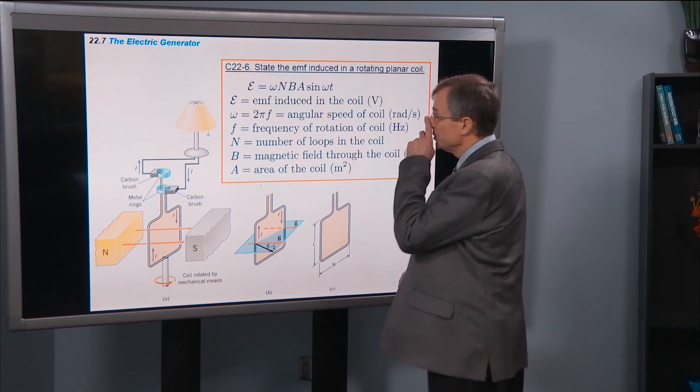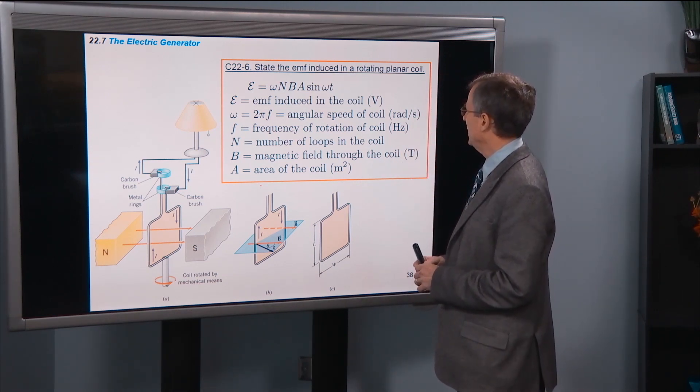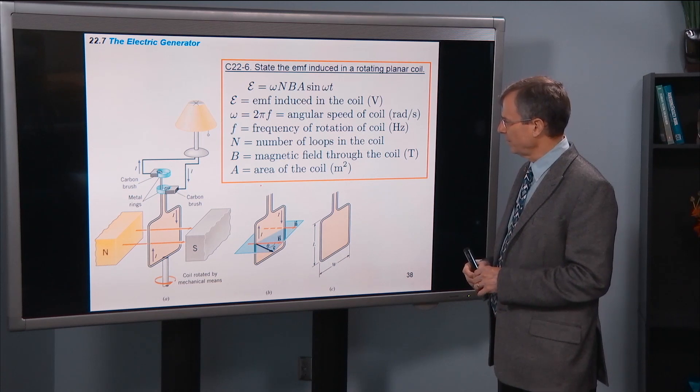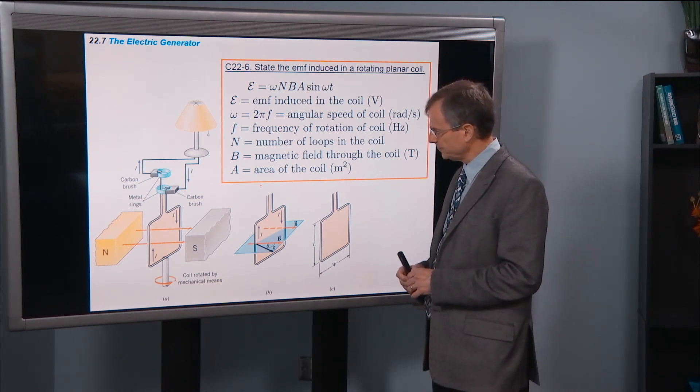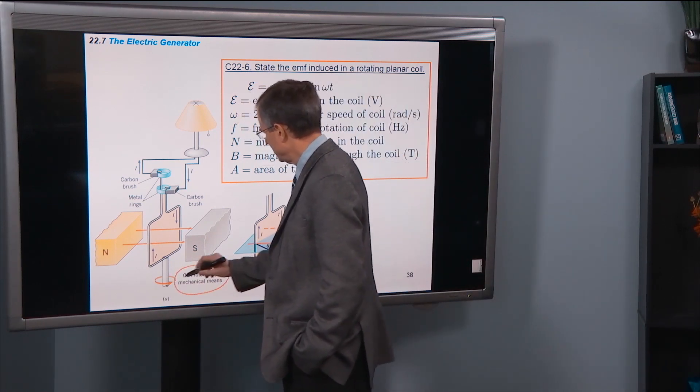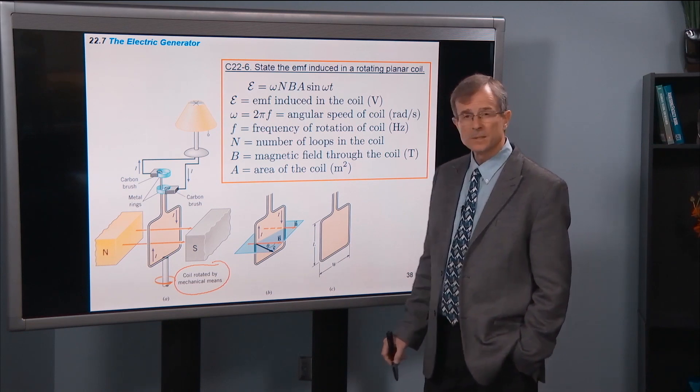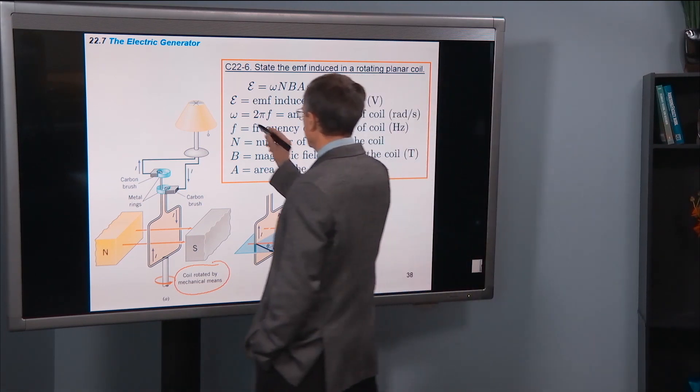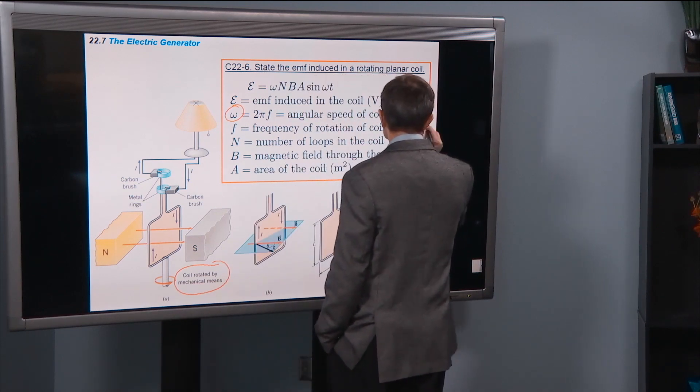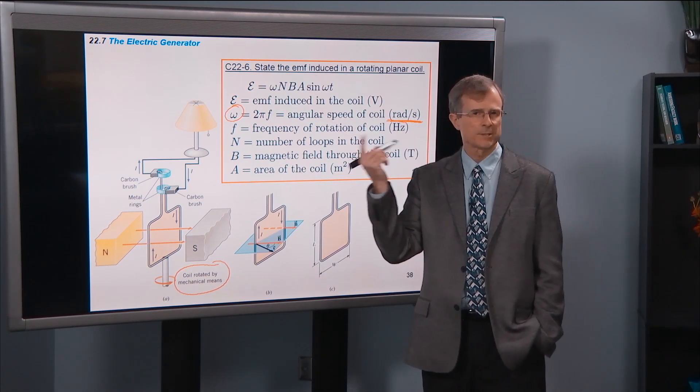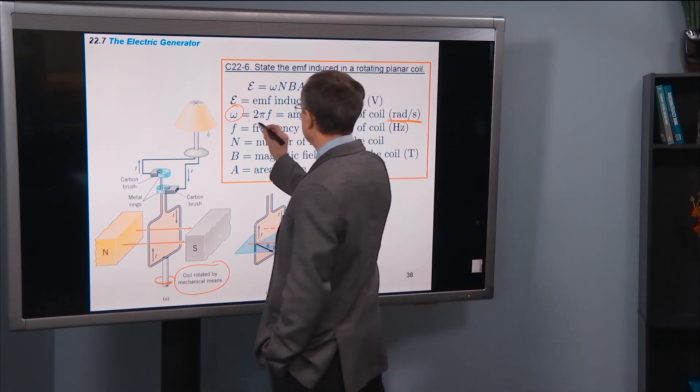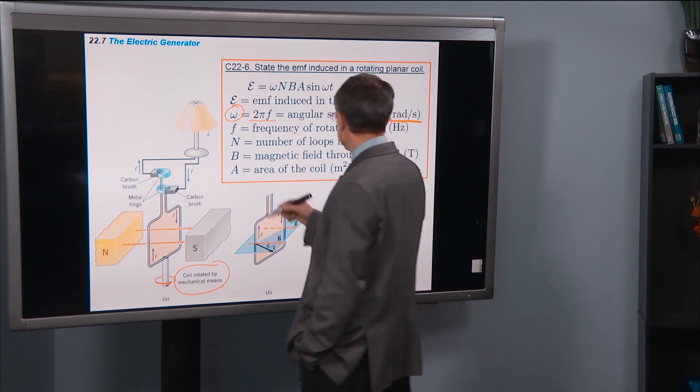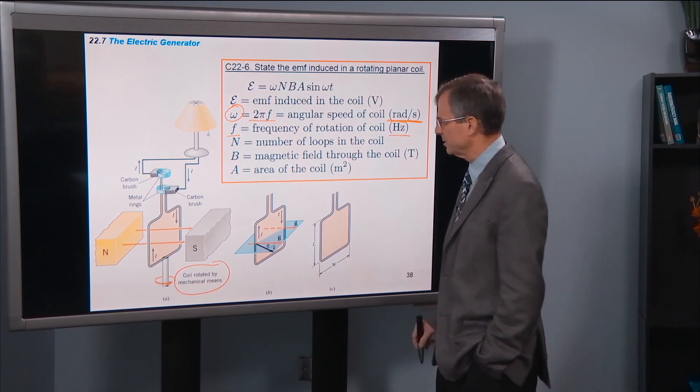So here's the one concept in this chapter: state the EMF induced in a rotating planar coil. This one's a bit of a mouthful, but if you have a coil that's being rotated at a constant angular speed, this goes back to last semester where we talked about rotational motion. Omega here is the angular speed measured in radians per second. It's like a linear speed, but we're talking about how fast it's rotating now. And that's equal to 2π times the frequency, a great review from last semester, where F is the frequency of rotation measured in Hertz.